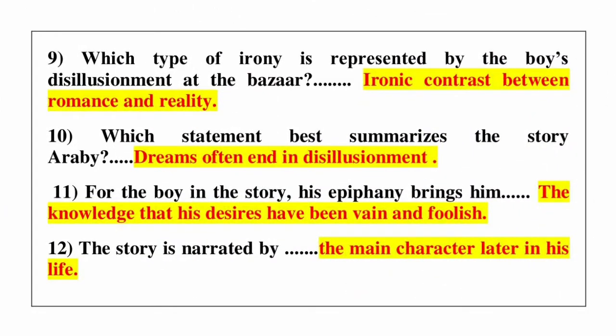Question number 9: which type of irony is represented by the boy's desolationment at the buzzer? Answer is ironic contrast between romance and reality. Question number 10: which statement best summarizes the story Arabi? Answer is dreams of an end in desolationment.